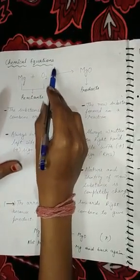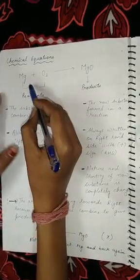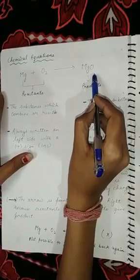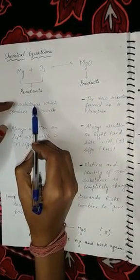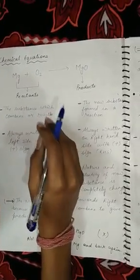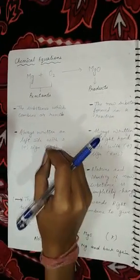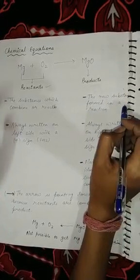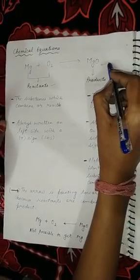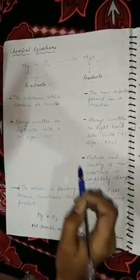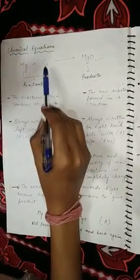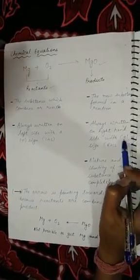Chemical equations should be written in the form of symbols: magnesium plus oxygen gives magnesium oxide. Magnesium and oxygen are reactants, and magnesium oxide is the product. Reactants are the substances which combine or react, written on the left-hand side with a plus sign. Products are the new substances formed in the reaction, written on the right-hand side.